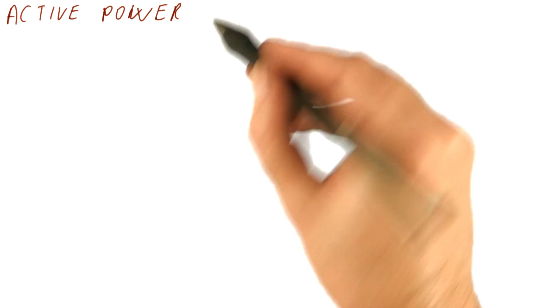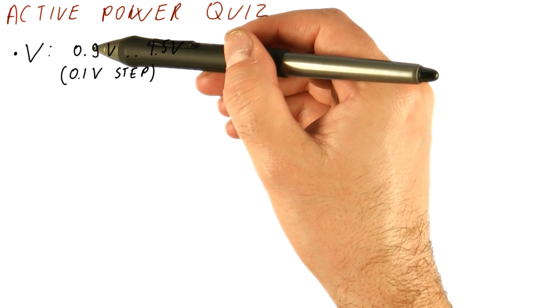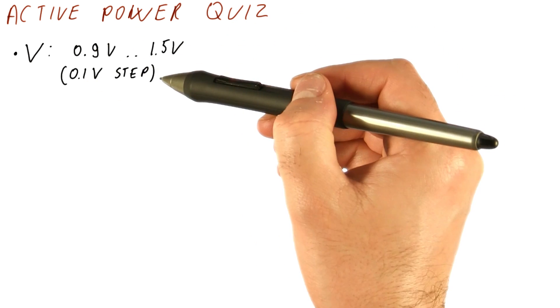Okay, so let's do now an active power quiz. Suppose we have a processor whose voltage can be changed between 0.9 and 1.5 volts in 0.1 volt steps.